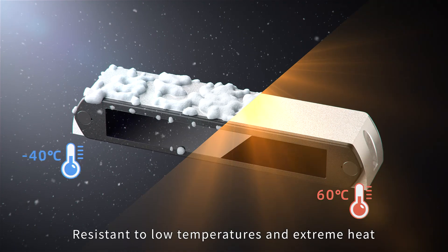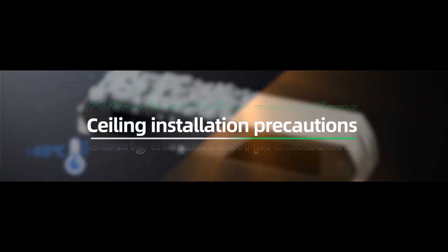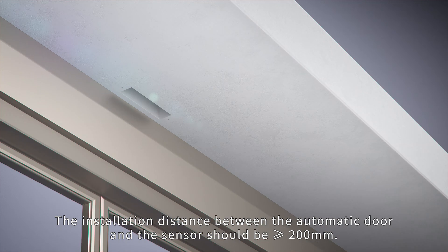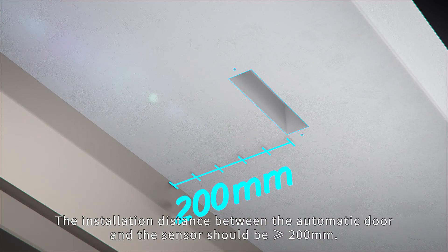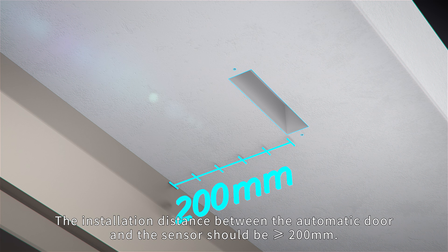Resistant to low temperatures and extreme heat. Ceiling installation precautions: The installation distance between the automatic door and the sensor should be greater than or equal to 200mm.